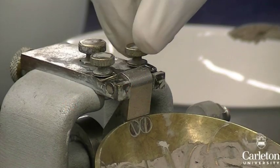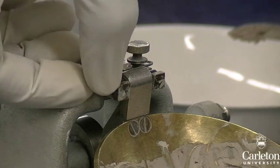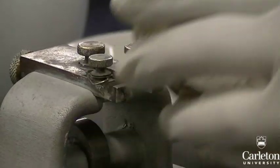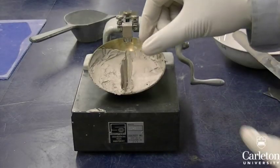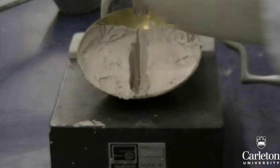When repeating the test, you will find it easier replacing the sample back into the container by removing the cup. To do this, loosen the screws, push the pin back, and lift the cup out. Remember that you are recording the number of drops it takes for the two halves of the sample to meet each other for a distance of 13mm.